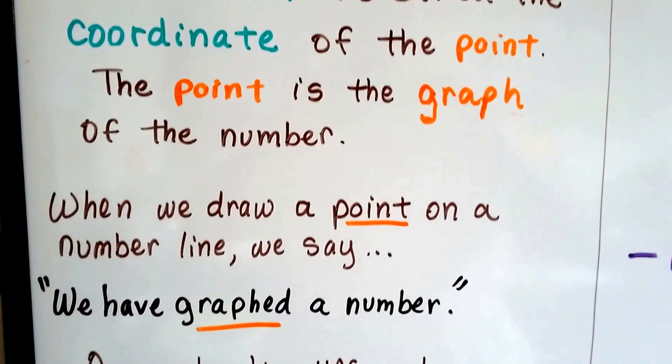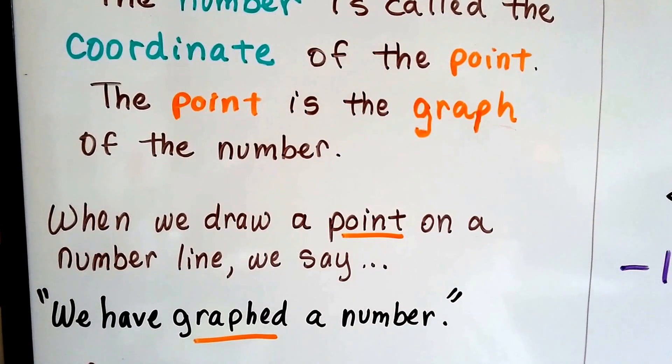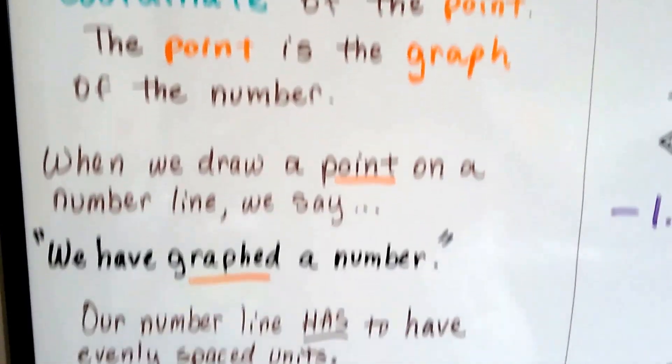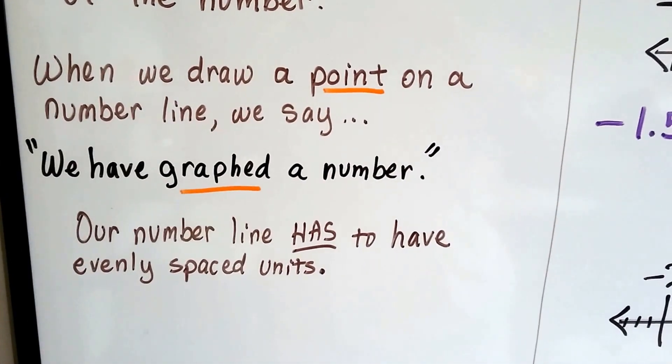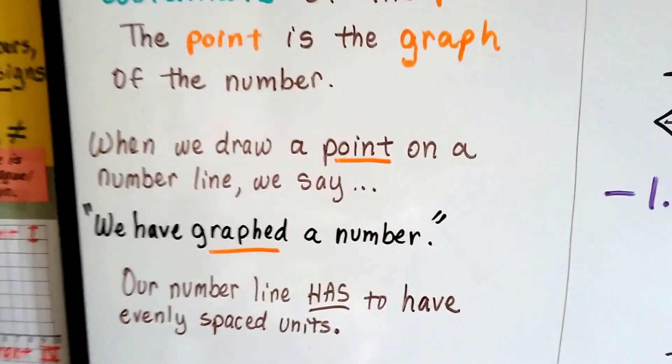When we draw a point on a number line, we say we've graphed a number. We use it instead of the word point. Our number line has to have evenly spaced units, otherwise it's not going to make sense.